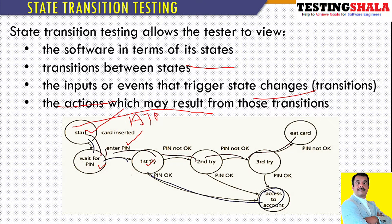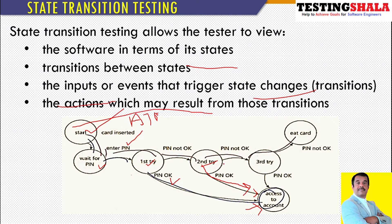When you enter the PIN, if it is the first try and the PIN entered is correct, then you will get access to the account. If the first attempt failed, it will give a second attempt as well. In the second attempt, if the person is able to successfully enter the right PIN, then the ATM will still provide access to that person.